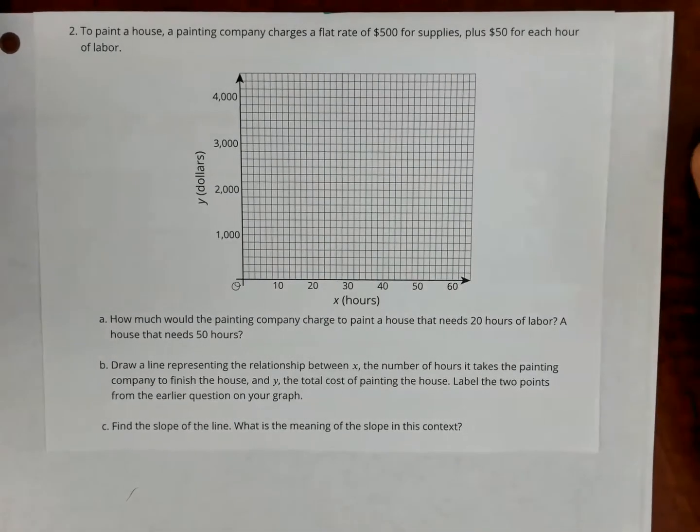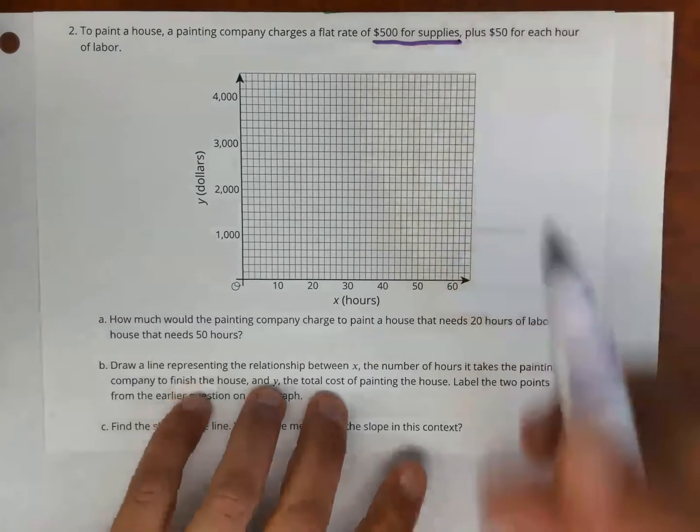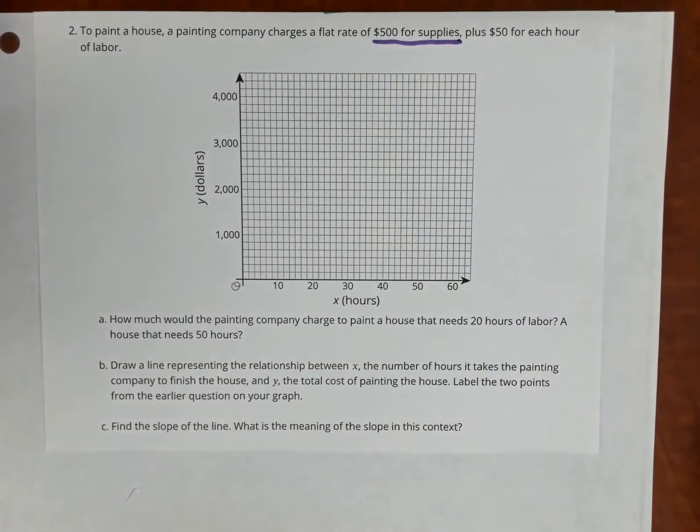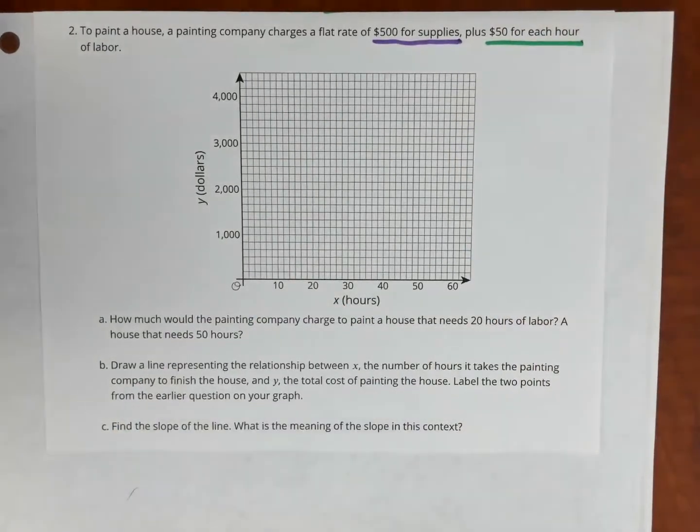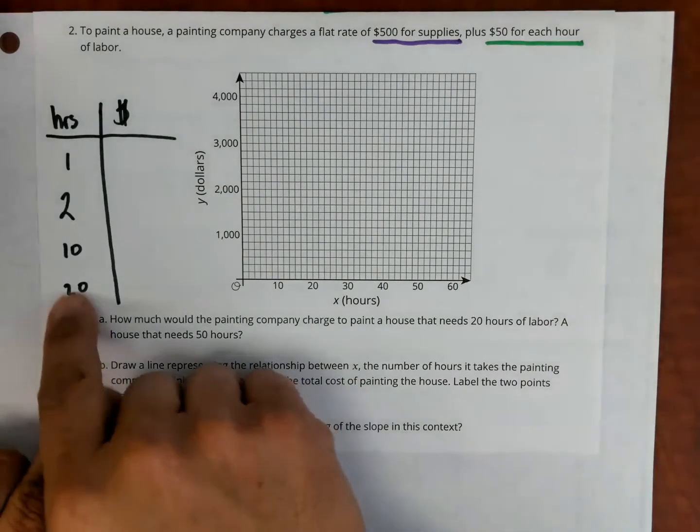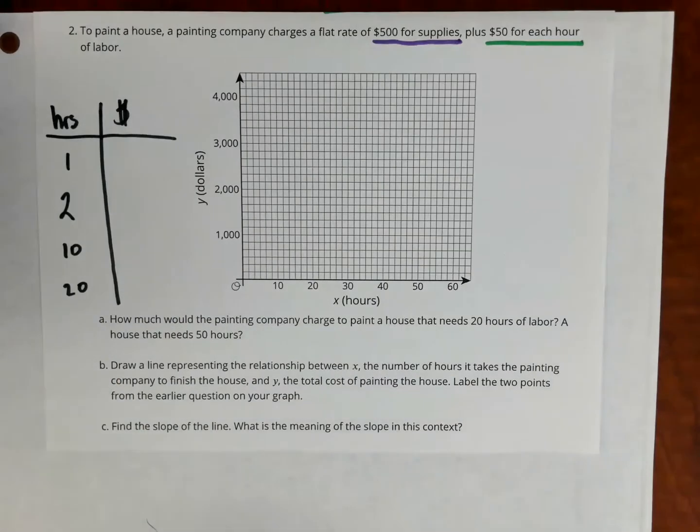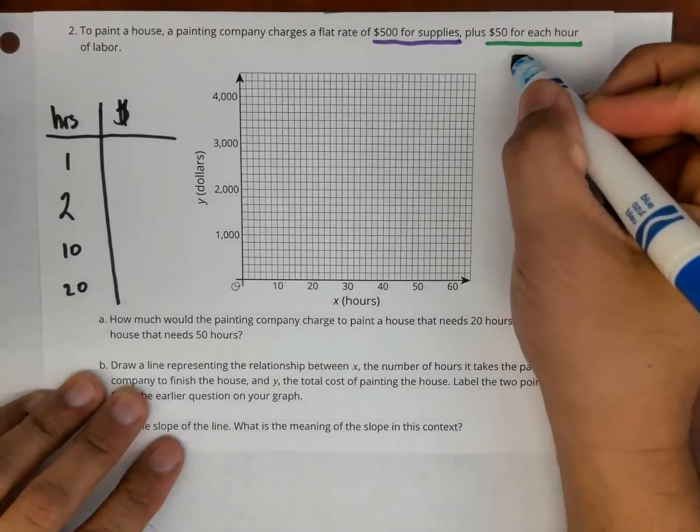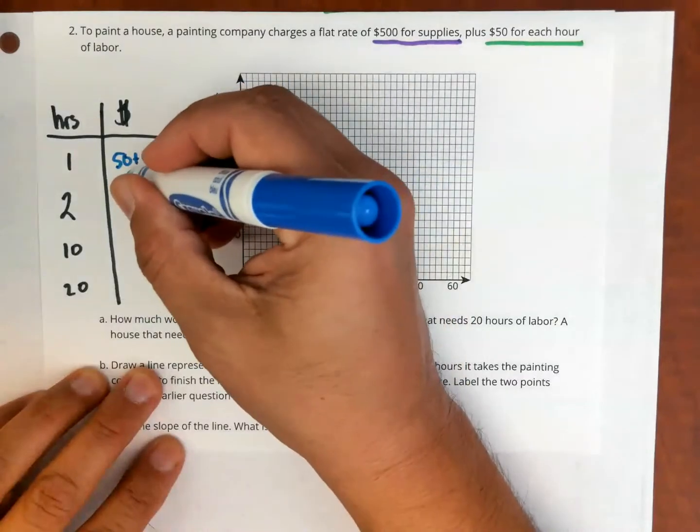Okay, so the first thing that I'm going to notice is that this company is charging $500 for supplies. Now that $500 for supplies, you would pay it only one time. It doesn't matter how many hours the company works, it's going to be $500. And then plus $50 for each hour. So I'm going to start here on the left side with a table of numbers just to illustrate what's happening here. This left column is the number of hours, this right column is the amount of money that the company charges. So for one hour, the company is going to charge $50 plus $500 for supplies, which is $550.